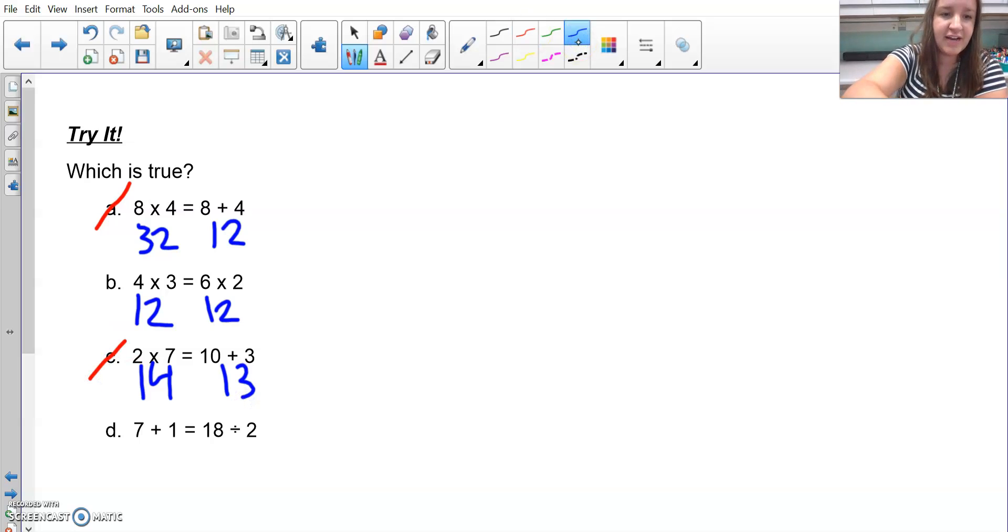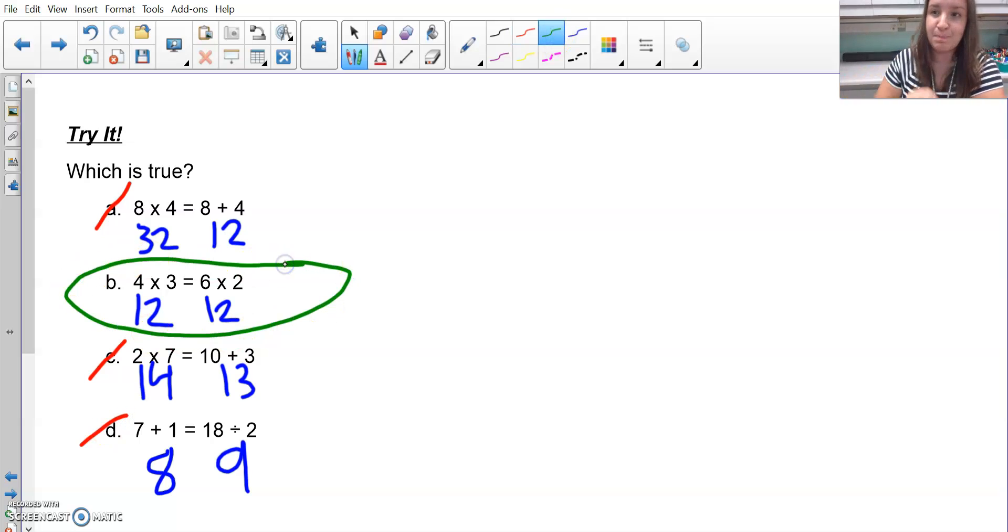Over here, I've got seven plus one, which is eight, and 18 divided by two is going to be nine. Once again, very close to each other, but not equal. So that would not be my answer as well. It looks like B is true because both sides of the equation are equal to each other.